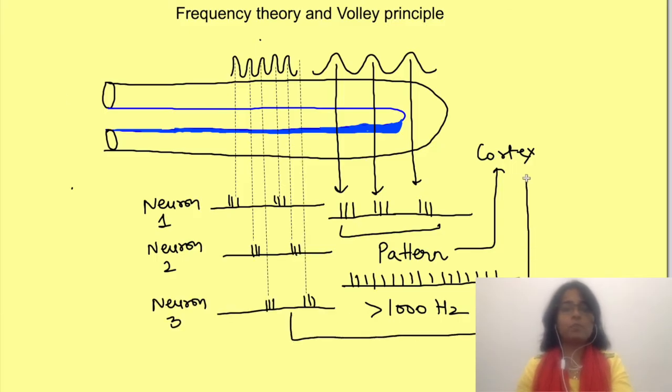All this information from different neurons reaches the auditory cortex, which sees this pattern of firing of many neurons together and recognizes it as a particular frequency. So the limitations of frequency theory caused by firing of a single neuron is overcome by many neurons coming together and firing in a particular set.